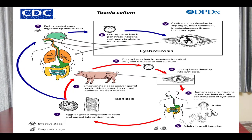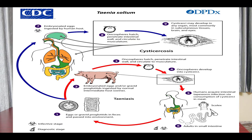The fertilized eggs develop into an onchosphere larvae enclosing a hexacanth embryo with six hooks. The onchosphere consists of the hexacanth embryo enveloped by an embryonic membrane, an embryophore, and an outer hard shell. In the terminal gravid proglottid, the uterus is packed with numerous onchospheres so that these segments are almost devoid of any other structures.